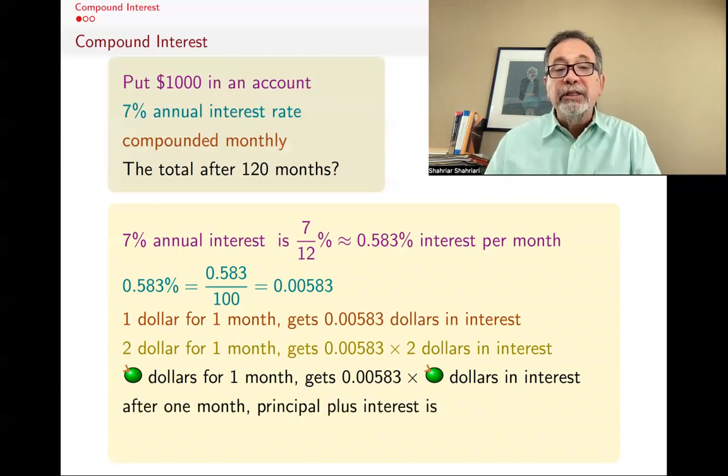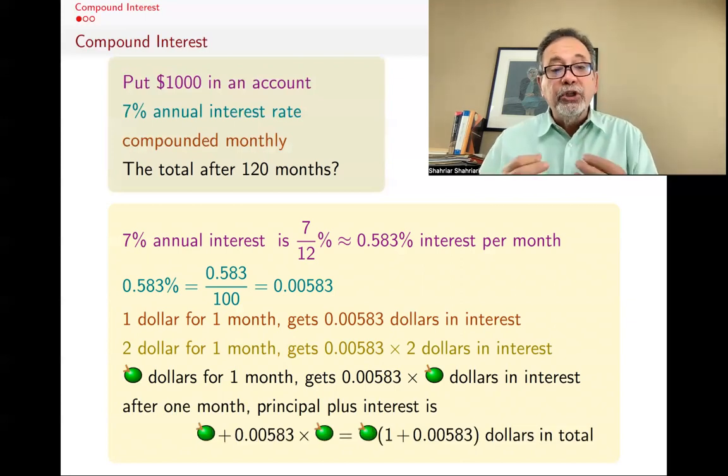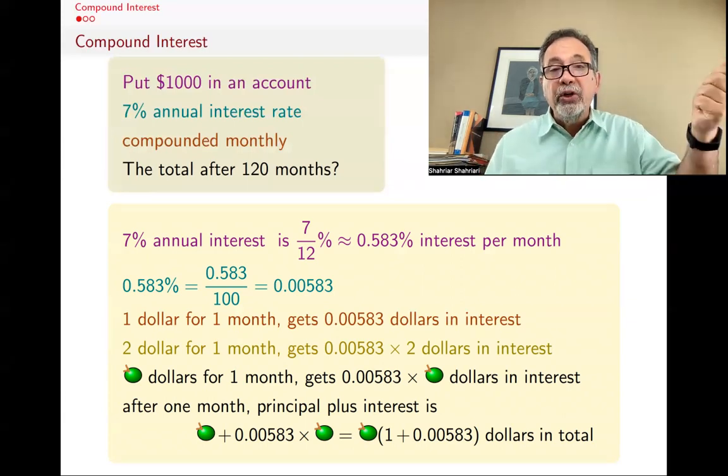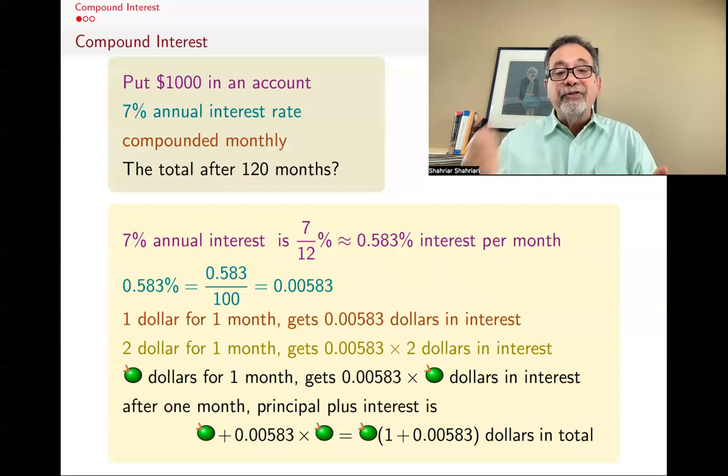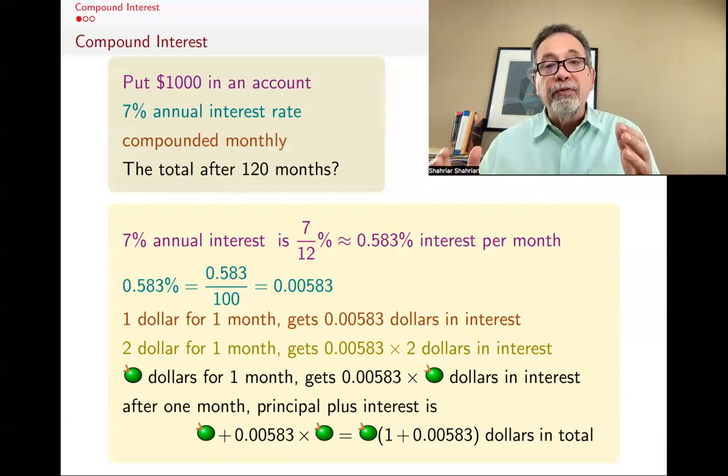So how much after one month, what will be your principal plus interest? It will be A, your original, plus the interest, which is 0.00583 times A. If you factor the A, you get A times 1 plus 0.00583 in total. So if you start with A dollars after one month, you have A times 1 plus 0.00583.